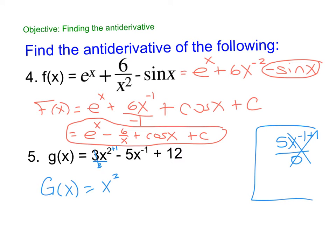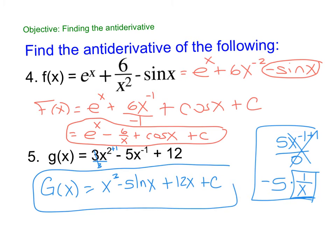So think about it this way. This is minus 5. x to the minus 1 is 1/x. Whose derivative is 1/x? That's your ln. So this is minus 5 ln(x) plus whose derivative is 12? 12x, and then we have to throw in our plus C.